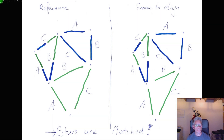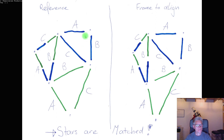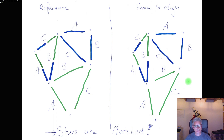Registration is based on pattern recognition between the reference frame and the frame to align. In this case, we use triangle patterns, or triangle descriptors. You can see on the left side three triangles — a blue one, a green one, and a blue-green one. You will also see these triangles in the frame to register. The image can be successfully registered if the patterns seen in the reference frame can be identified in the frame to align within a certain error margin.